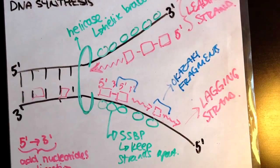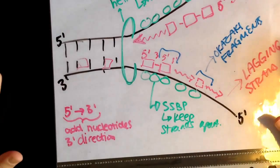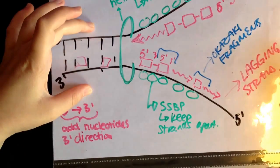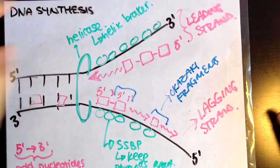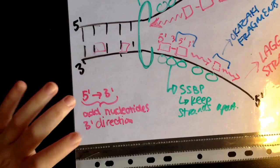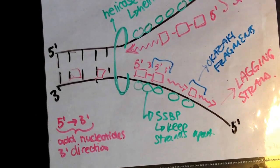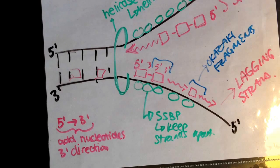Hopefully this clears up the whole concept of the leading strand and the lagging strand. The take-home message is: DNA is anti-parallel — both the parent DNA and the daughter strand being made are anti-parallel. And DNA is always built from a 5' to 3' direction, so you can only add nucleotides onto the 3' end. If anything is still unclear, please leave a comment or message me. I'm open to suggestions and questions — thanks for watching, and good luck on your exams!